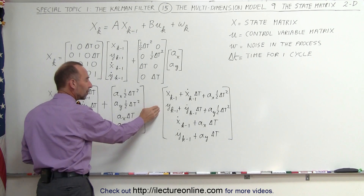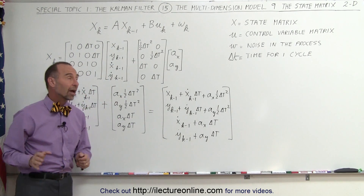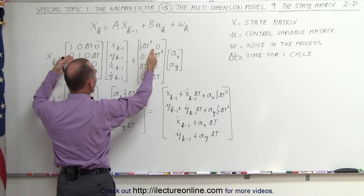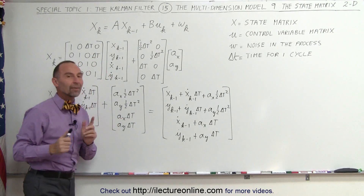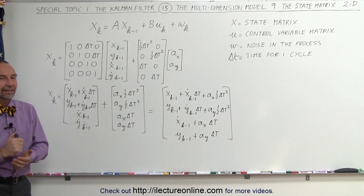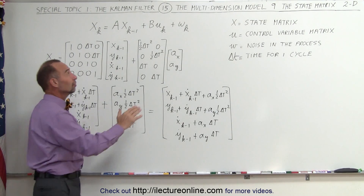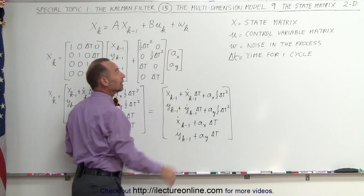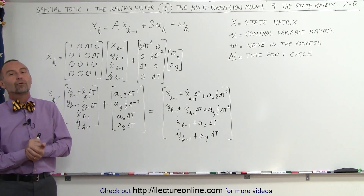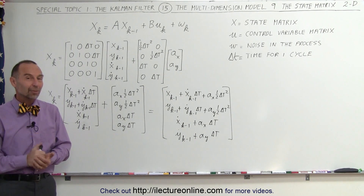And now we have the adjustment from the previous state to the current state: the x position, the y position, the velocity in the x direction, and the velocity in the y direction. That's how the state matrix is used — that's how we use matrix A and matrix B in the correct format so we can make the adjustment and now have a new state with new values for the x and y position, the velocity in the x direction, and the velocity in the y direction. You can tell that at this point we have not yet included the noise in the process, but that comes later. We'll have to show you how to make the covariance matrices, and we'll show you that in some later videos.